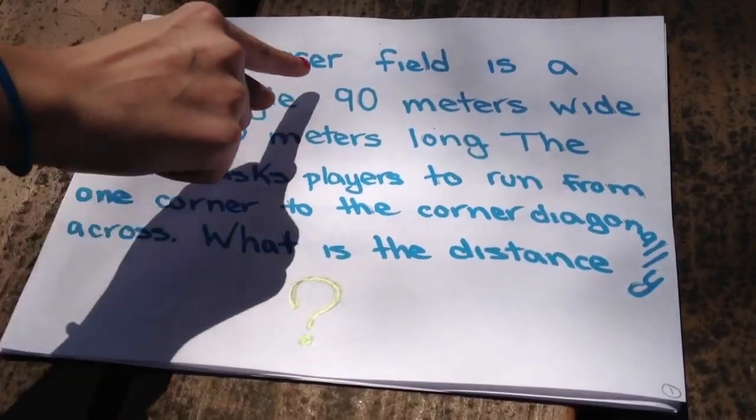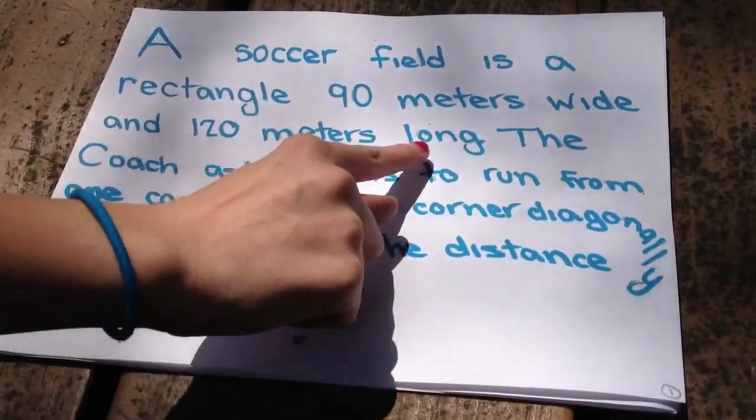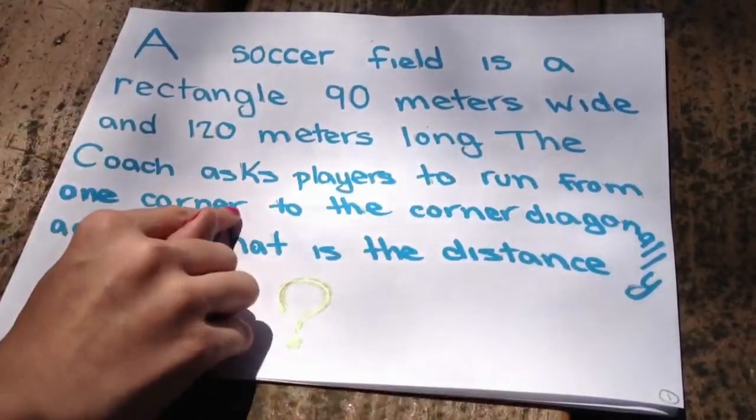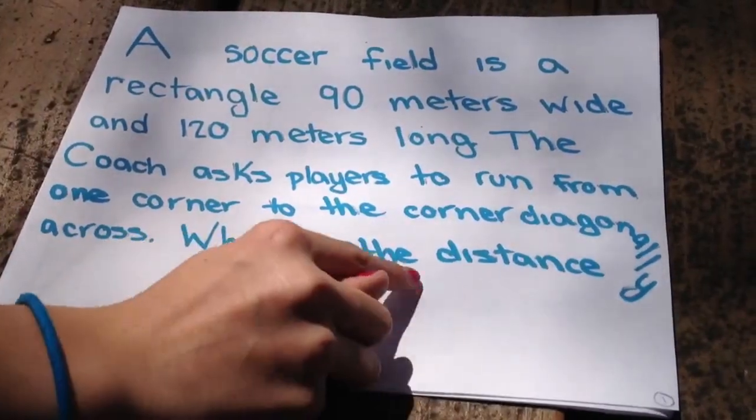A soccer field is a rectangle 90 meters wide and 120 meters long. The coach asks players to run from one corner to the corner diagonally across. What is the distance?